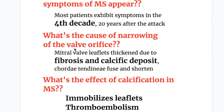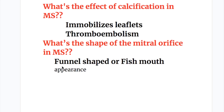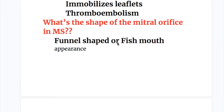What is the cause of narrowing of the valve orifice? The mitral valve leaflet is thickened due to fibrosis and calcific deposits. Chordae tendineae fuse and shorten. Calcification causes immobilization of the leaflets and thromboembolism. The shape of the mitral orifice in mitral stenosis is funnel-shaped or fish mouth appearance.